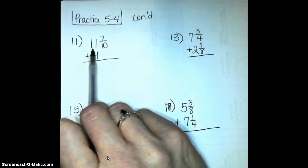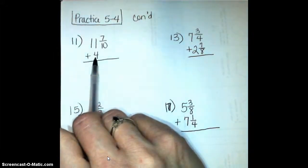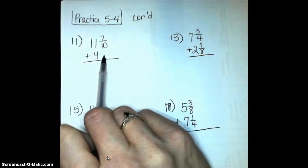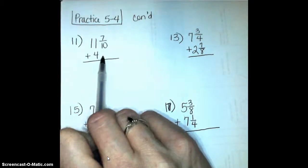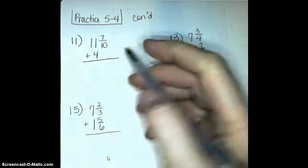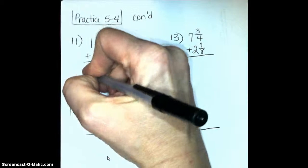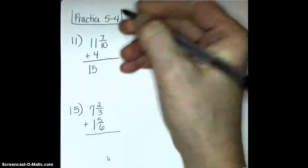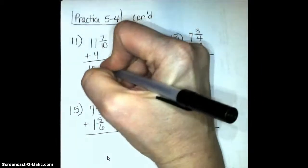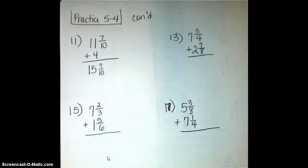Number 11 says 11 and 7 tenths plus 4 wholes. Well, there's really nothing over here as far as a fraction goes to add to it, so we're just going to add 4 wholes onto my 11 and 7 tenths, so that's pretty easy. 11 wholes plus 4 wholes is 15, and then our fraction is 7 tenths. So that one was pretty easy. All we had to do was add our whole numbers together.